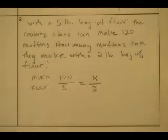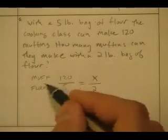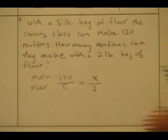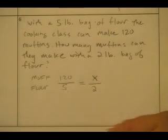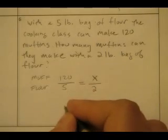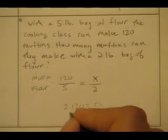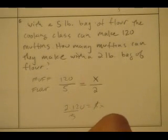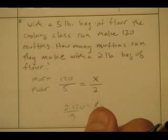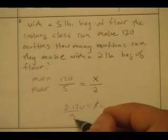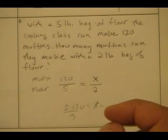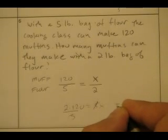One twenty is to five as x is to two. The muffin-to-flour ratio is one twenty to five. To solve it: two times one twenty equals five x. Divide both sides by five. How many fives go into one hundred? Twenty. How many fives go into twenty? Four. So twenty-four times two: x equals forty-eight muffins.